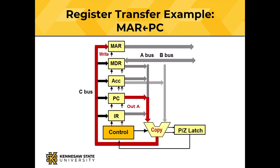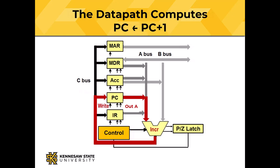Let's see how that looks on the actual TBC data path. On the falling edge of the clock signal, the ALU is commanded to copy, the program counter register is enabled on the A bus, and a write signal is asserted on the memory address register. During the clock's low period, data travel from the program counter through the ALU to the MAR. The rising edge of the clock signals the MAR to store the contents from the C bus. For incrementing the program counter: on the falling edge, the PC register is enabled on the A bus and the ALU is commanded to increment. The addition occurs, and the incremented program counter value appears on the C bus. On the rising edge of the clock, the incremented value is stored in the program counter.